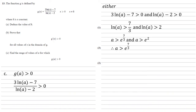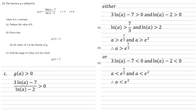The other way for the fraction to be larger than 0 is for both the numerator and denominator to be negative, so the negatives cancel to give a positive. This gives a < e^(7/3) and a < e², so we take the smaller bound: a < e². Combining with the domain condition x > 0, the full answer is 0 < a < e² or a > e^(7/3).